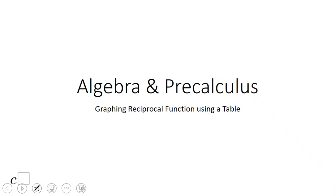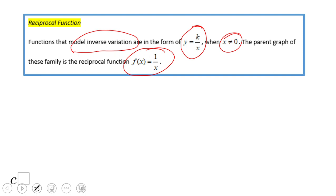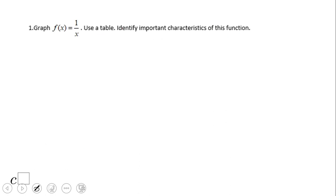Welcome back. In this video clip we're going to take a look at reciprocal functions and graph them using tables. This is the parent graph of the reciprocal function f(x) = 1/x, and this is the general form of the reciprocal function — they model inverse variation. One thing to be aware of: x cannot be zero, because then it's undefined. We're going to look at two graphs first using a table, and then we'll see if we can find a shortcut.